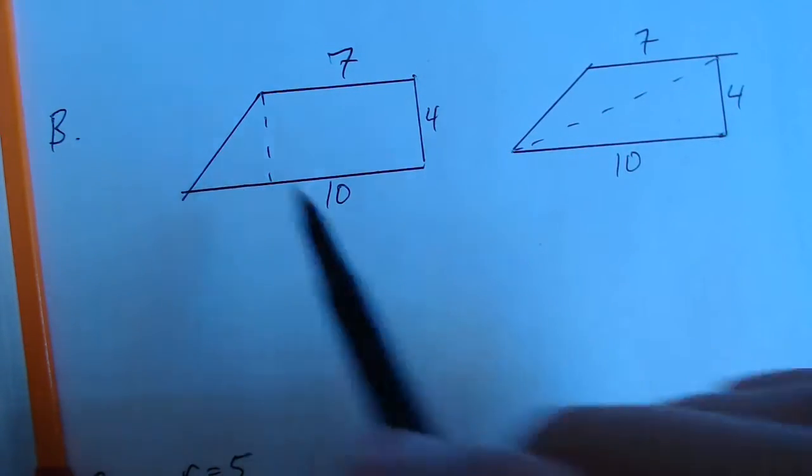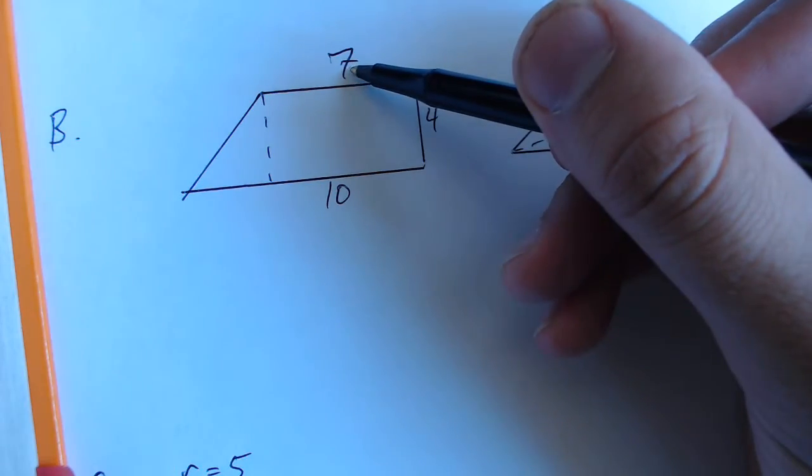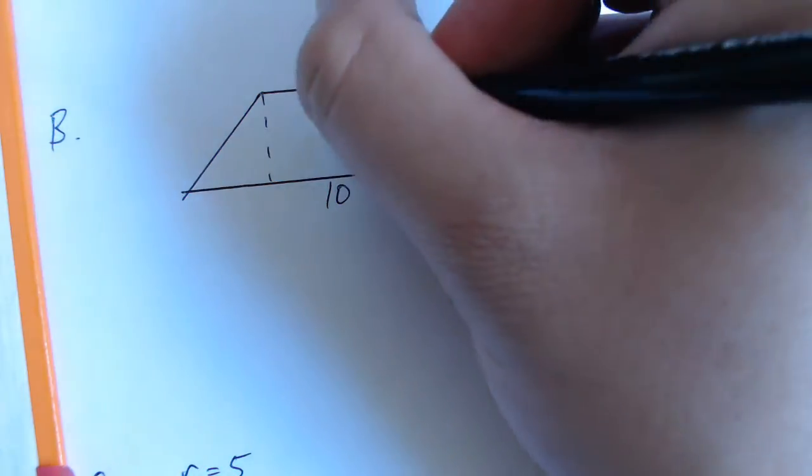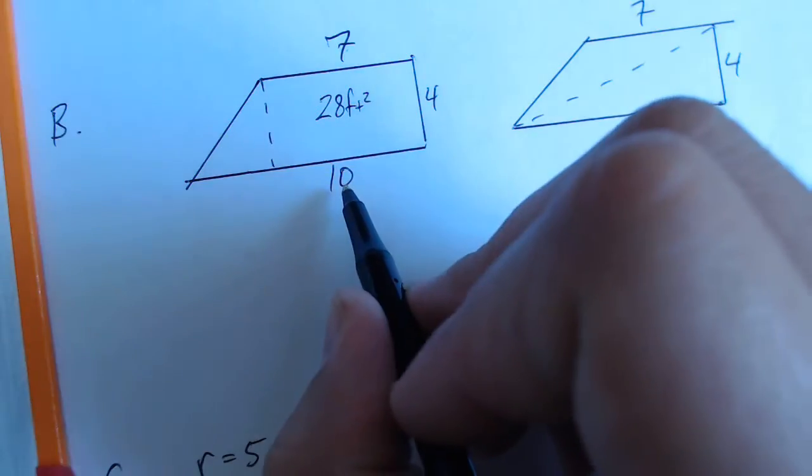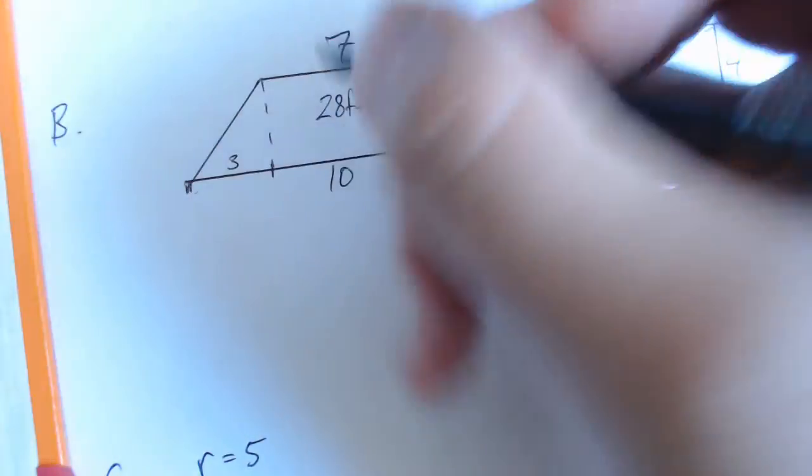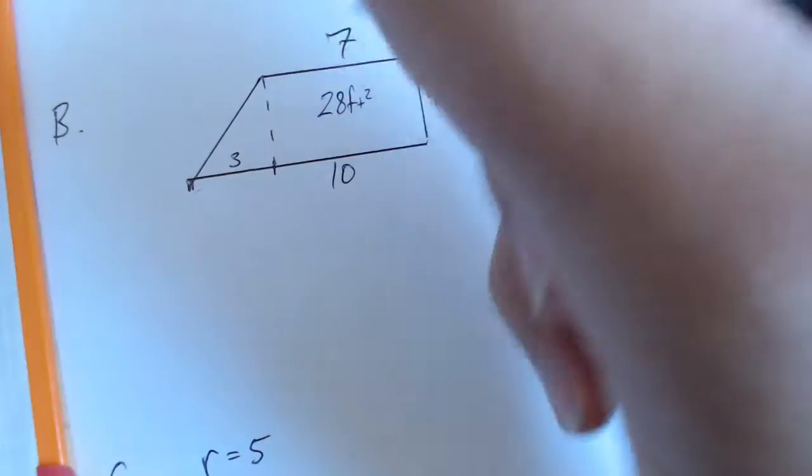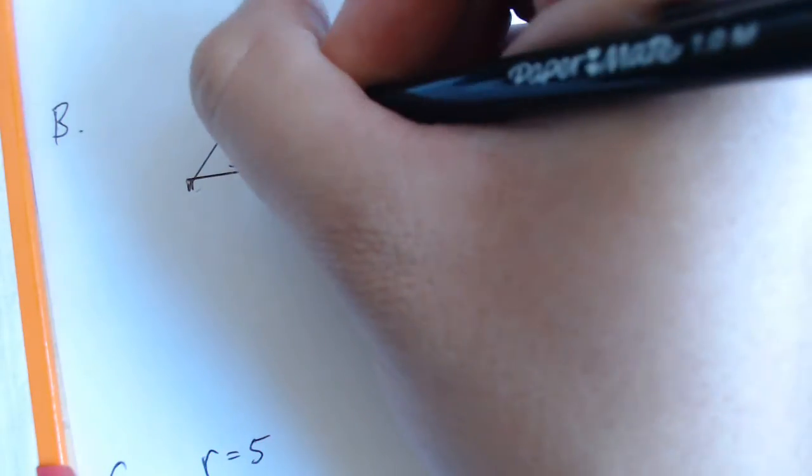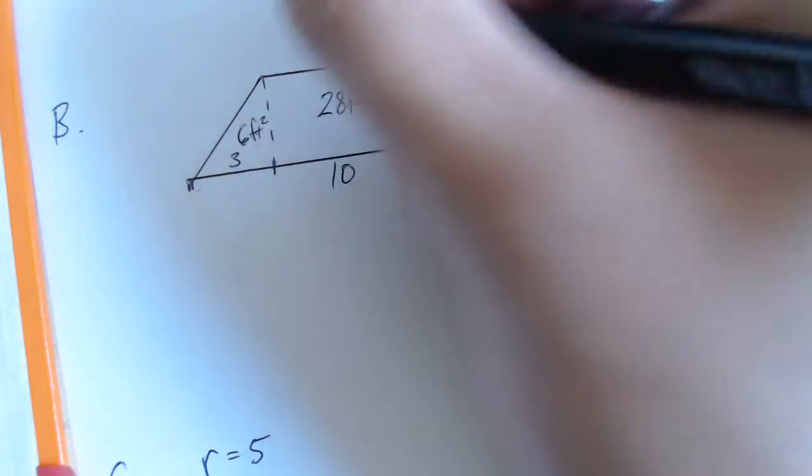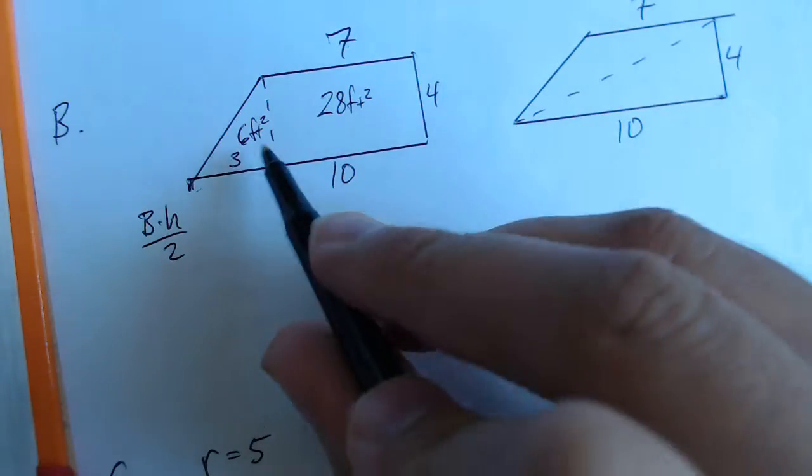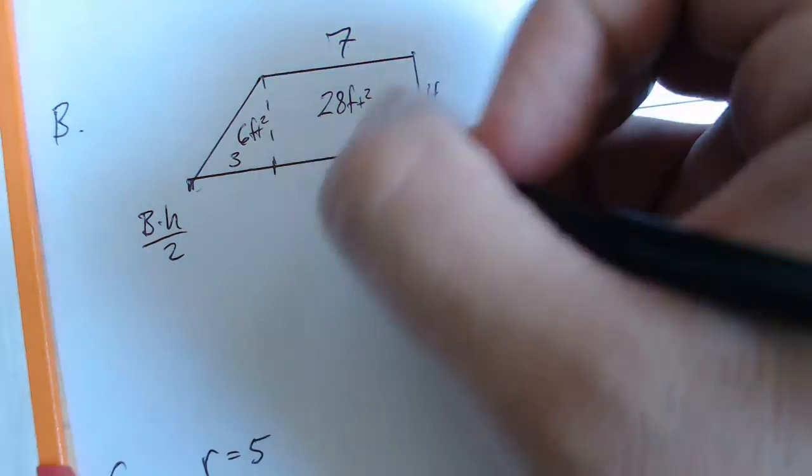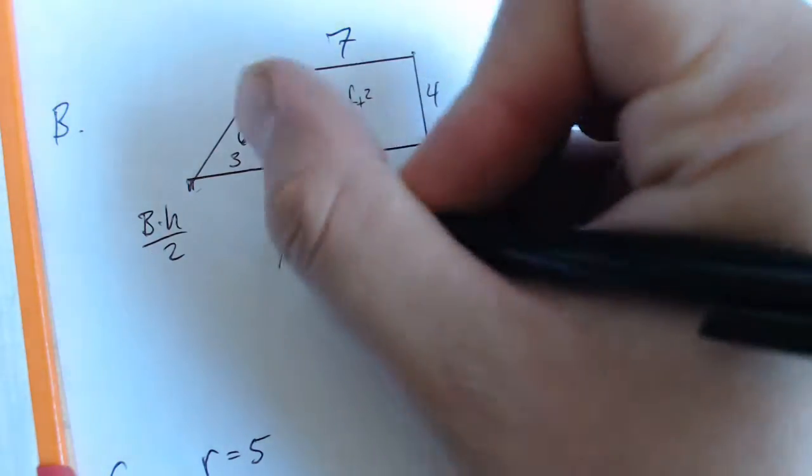I'll go over the rectangle and the triangle first. The base of the rectangle is the short side of 7, and the height is 4. That gives us 28 feet squared. To get the base of this triangle, we would have to subtract 10 from 7, which gives us 3. So this piece from here to here is 3, and the height would also be 4. So we would take 3 times 4, divide it by 2, and that would give us 6. We're using the equation base times height divided by 2 for the triangle. From there, we just add 6 feet squared and 28 feet squared together. That gives us 34 feet squared, and that is our area.